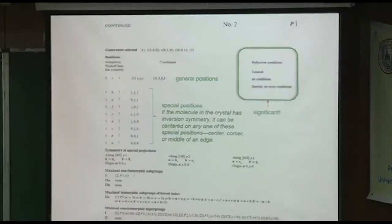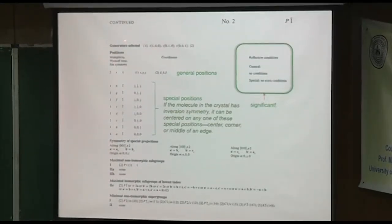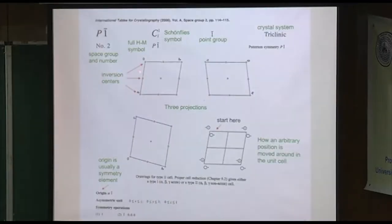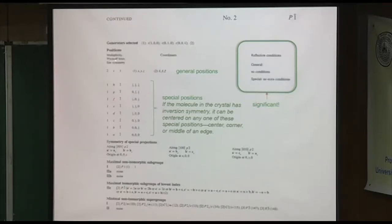The second page is also extremely interesting. The positions — in this case there are nine of them listed. These are called Wyckoff letters. Multiplicity means how often it appears. If you have something at a totally general position, not on an inversion center, it's listed as X, Y, Z, and because it's minus X, minus Y, minus Z generates a second molecule, the multiplicity is two. The first time I used that in a paper I misspelled Wyckoff — I was so embarrassed.